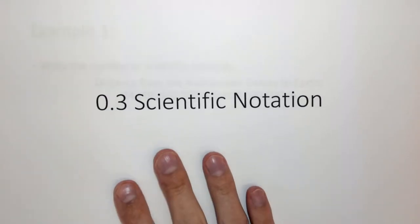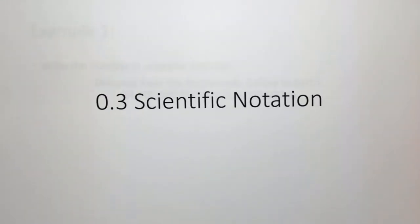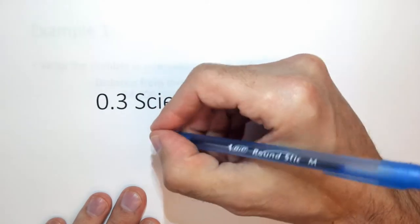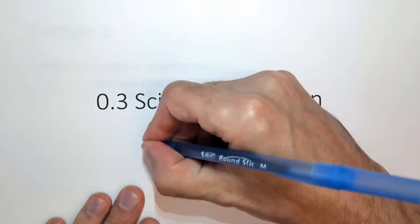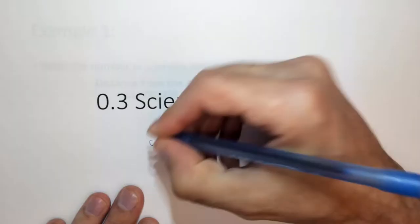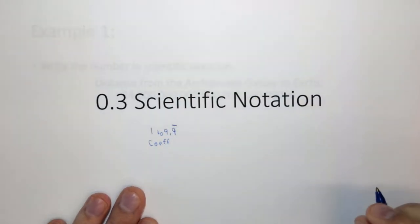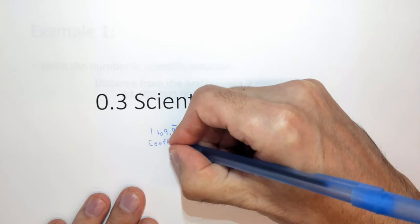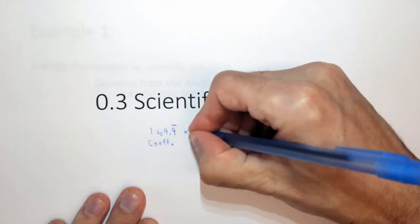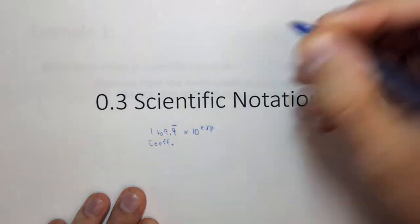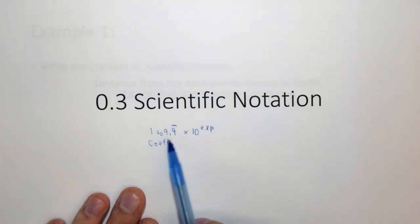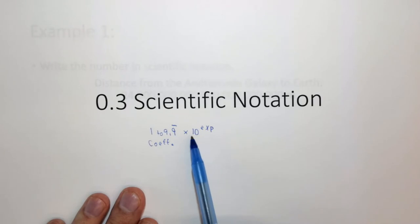In this section we want to do several examples with scientific notation, but first let's talk about scientific notation in general. Scientific notation has basically two parts: it has a coefficient which must be between 1 and 9.9 repeating, times 10 to some exponent. The coefficient must be between 1 and 10, but it can't be 10.